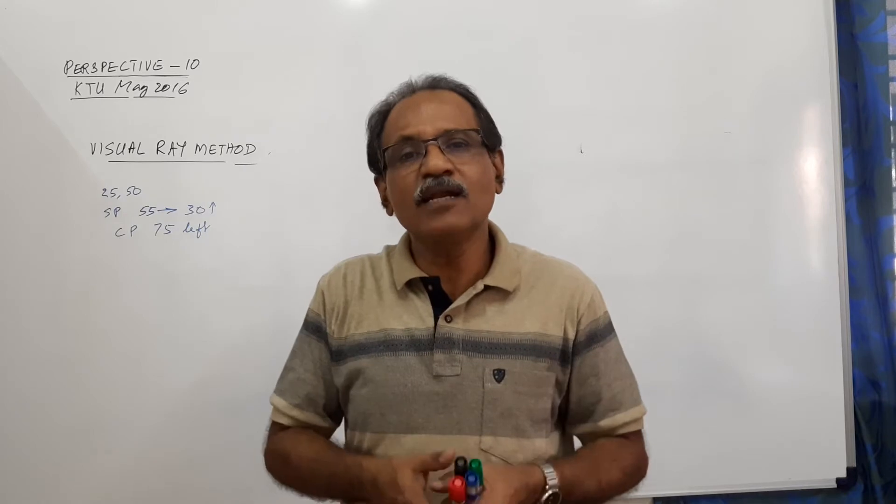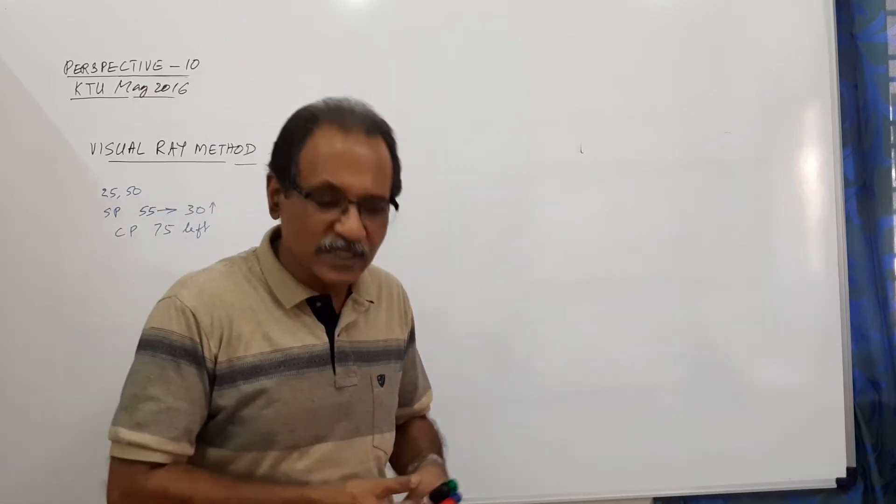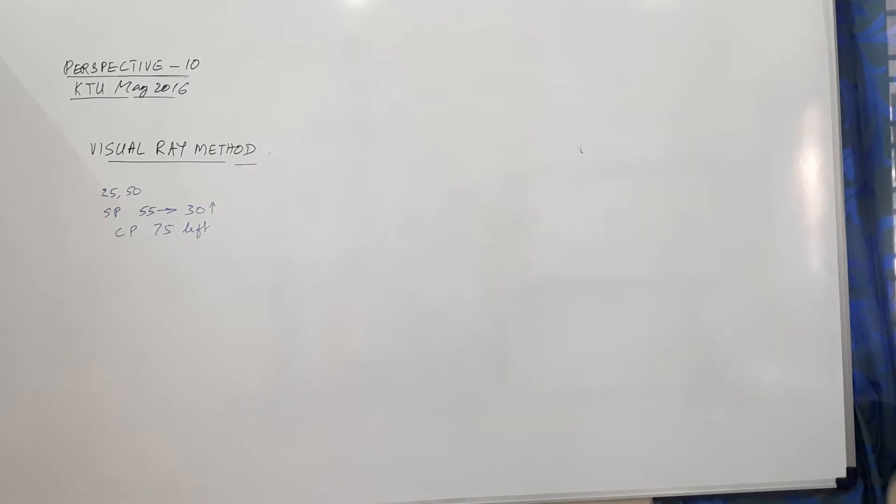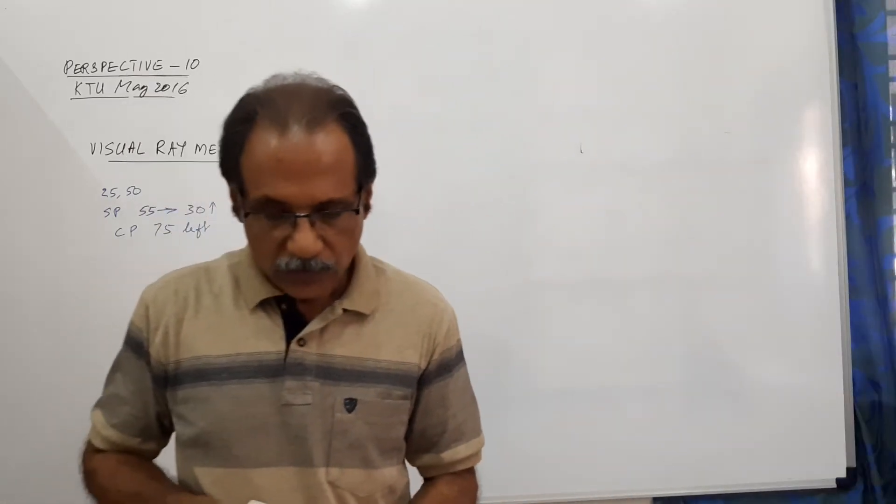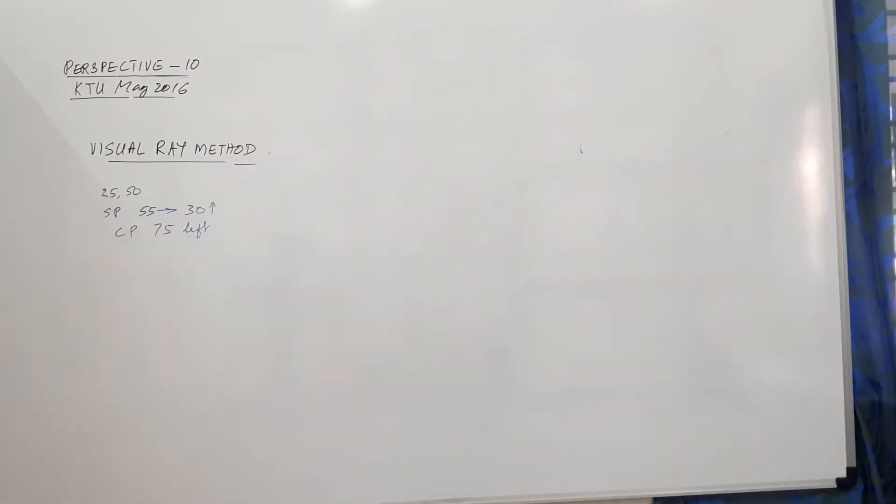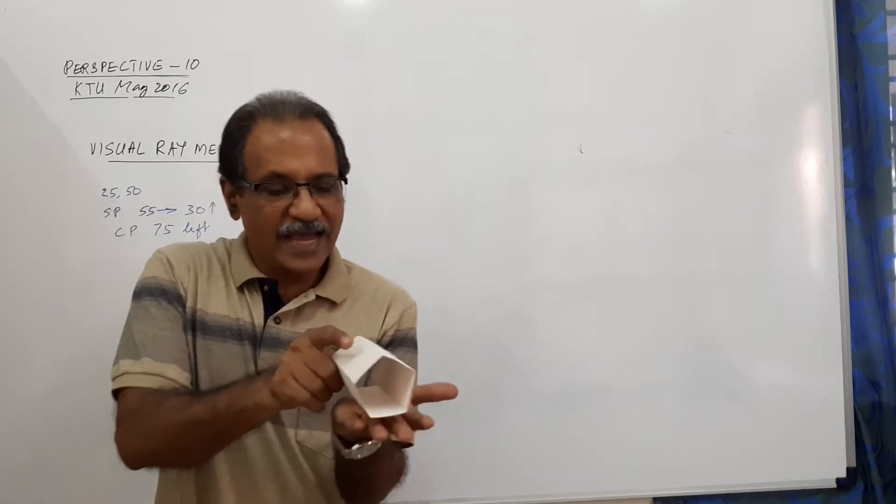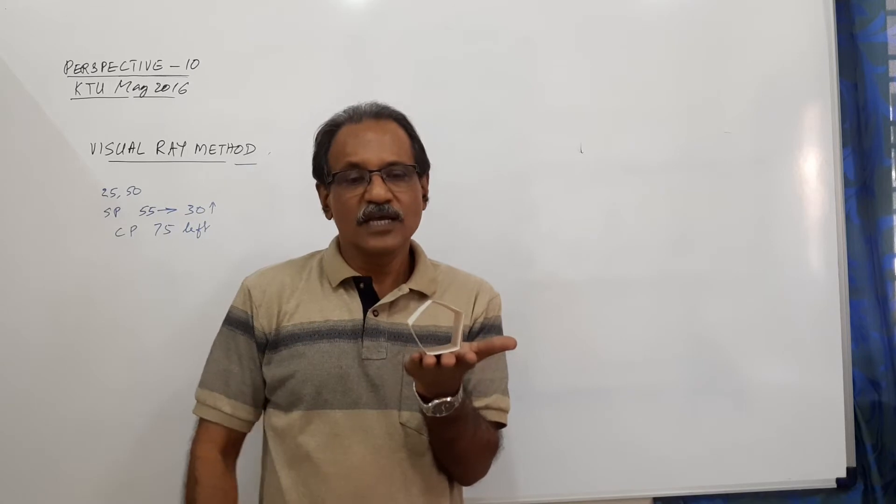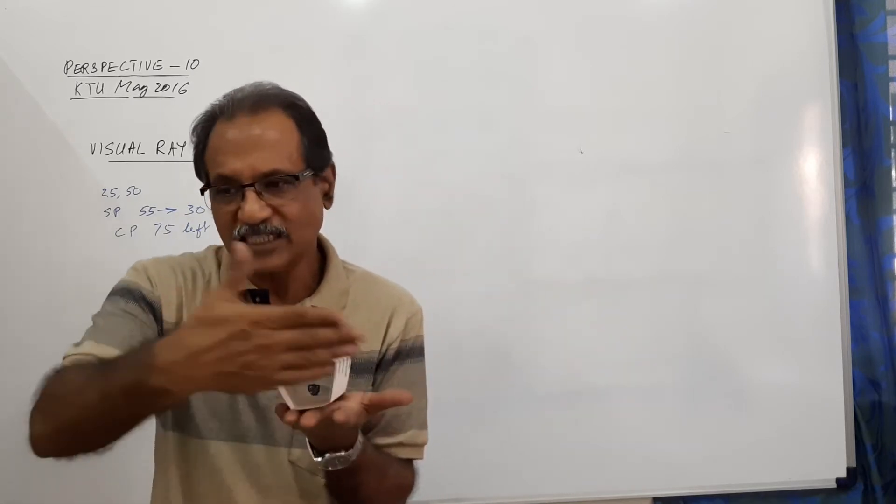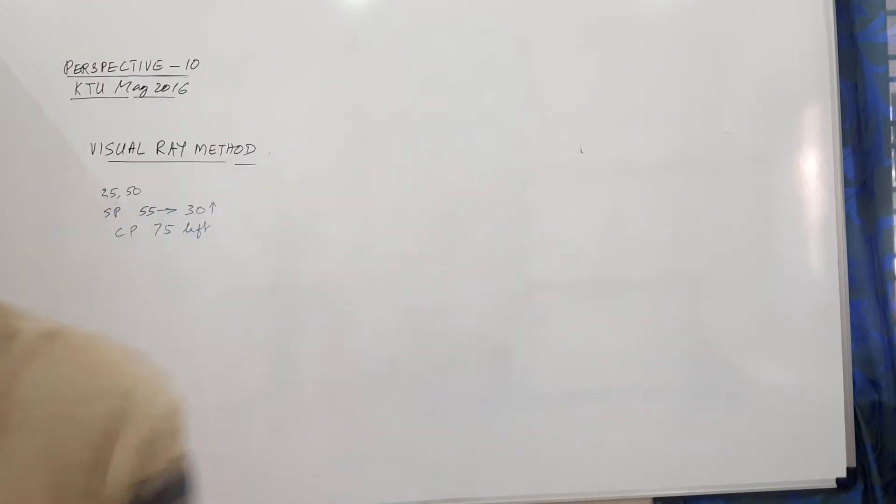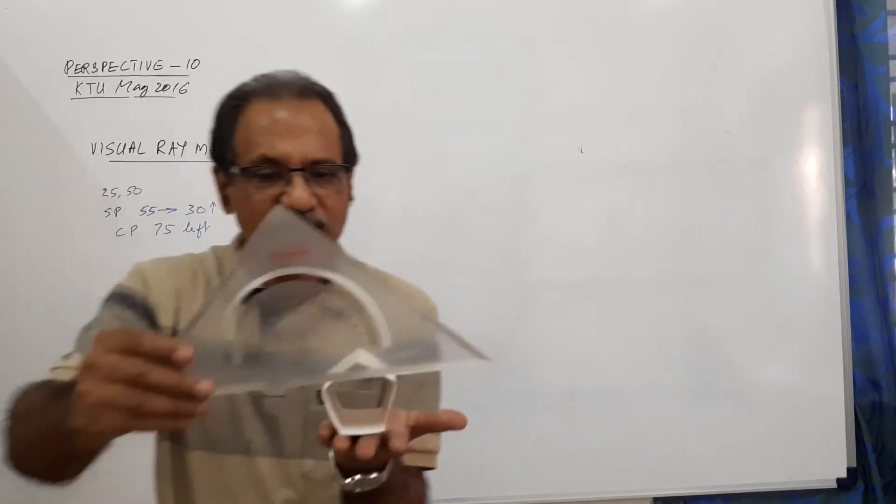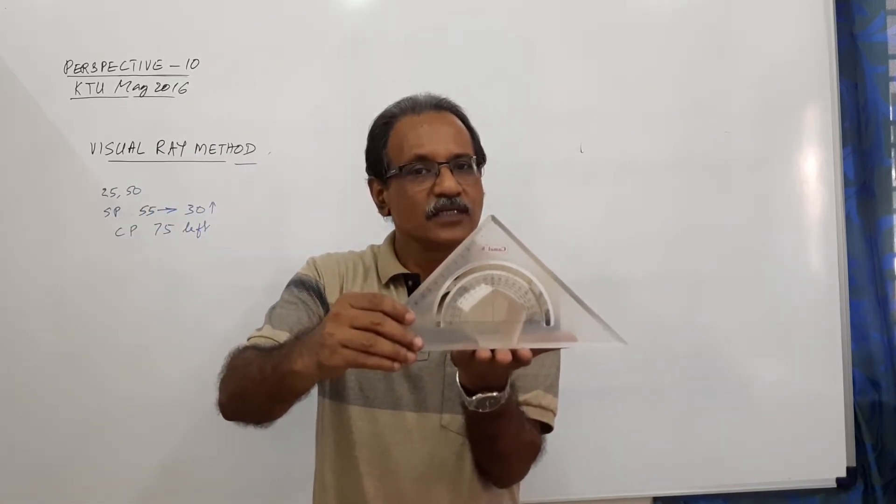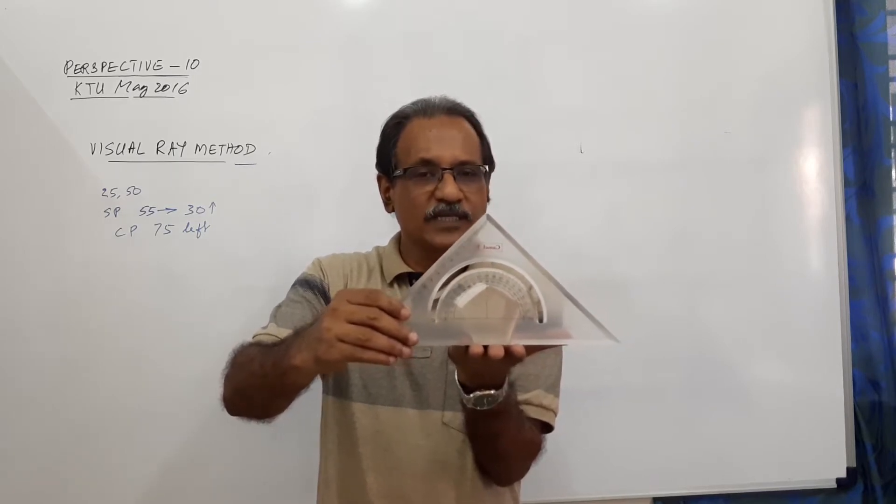It is about a pentagonal prism lying on the ground like this. A pentagonal prism lying on the ground on a rectangular face with the front pentagonal face touching picture plane. If this is picture plane, it is touching picture plane. This is the prism.